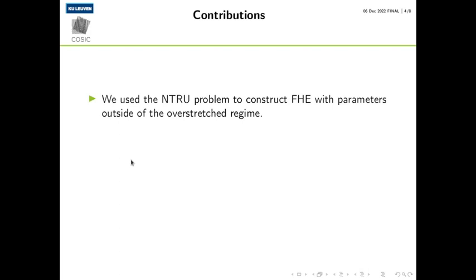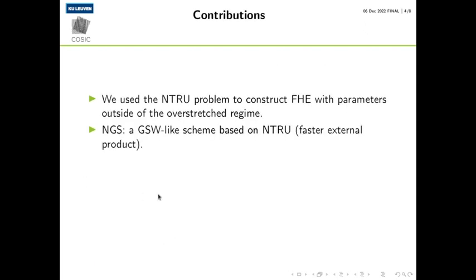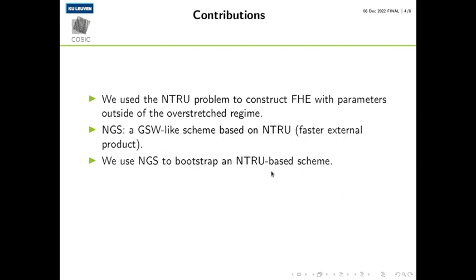The contributions of this paper are the following. We use the NTRU problem to construct FHE with parameters that lie outside of the overstretched regime, so our parameters are always in the safe region. Using NTRU, we construct a scheme similar to GSW but with a faster external product. We call this scheme NGS, and then we use NGS to bootstrap a scheme based on NTRU. Because both NGS and this scheme are based on NTRU, we construct FHE based only on the NTRU problem.